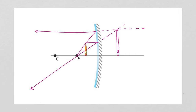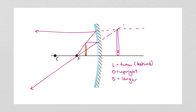You can see the image is a lot bigger and it's not inverted anymore. The location is still a little bit further — behind the mirror, or it appears that way. The orientation is upright. The size is larger. And the type is virtual, because we had to extend the light rays behind the mirror to figure out where it would appear.